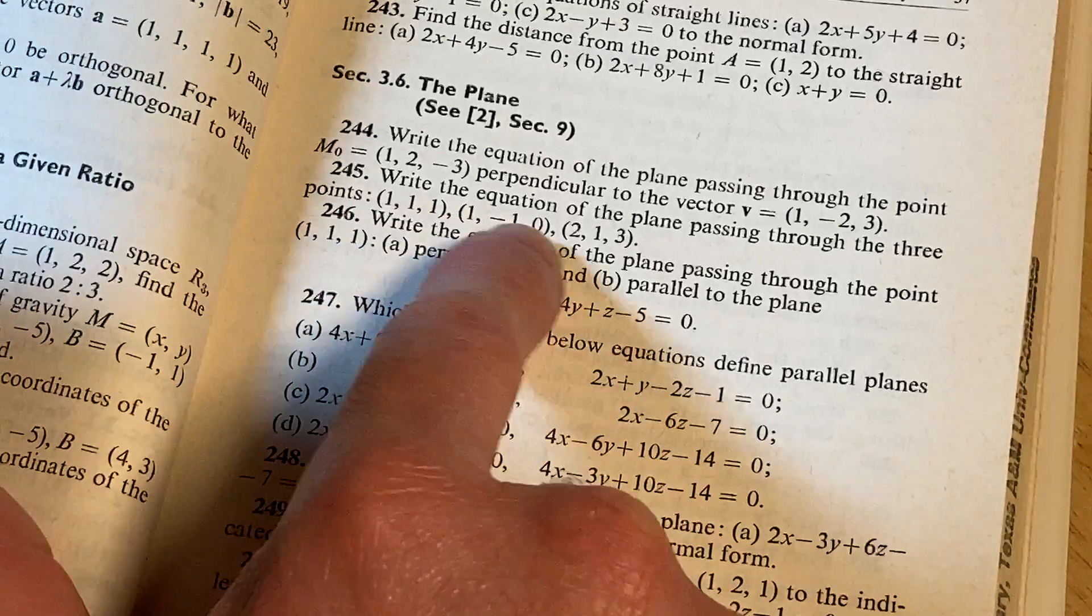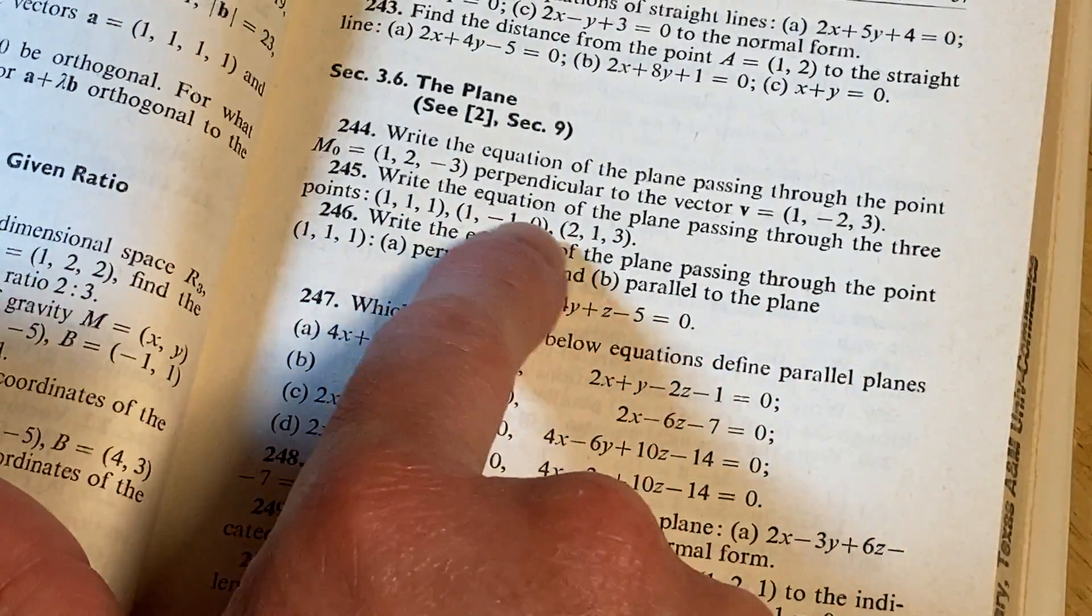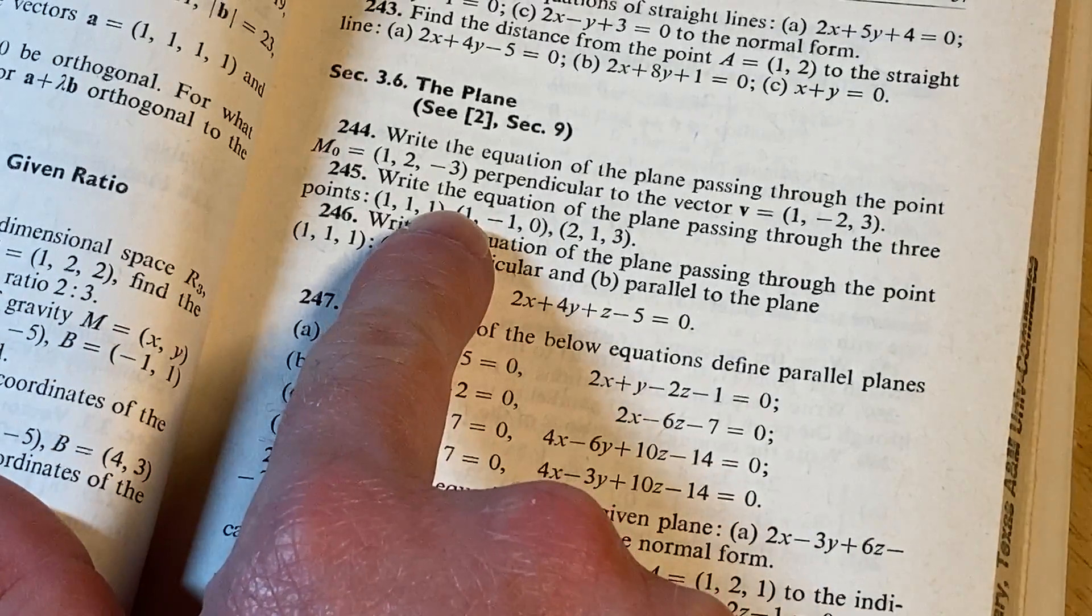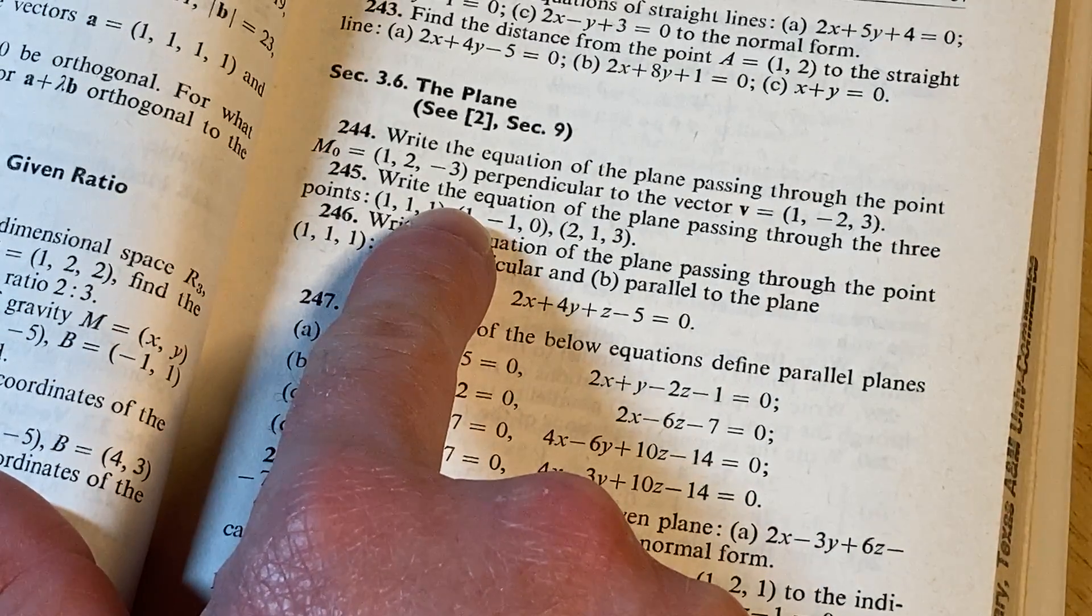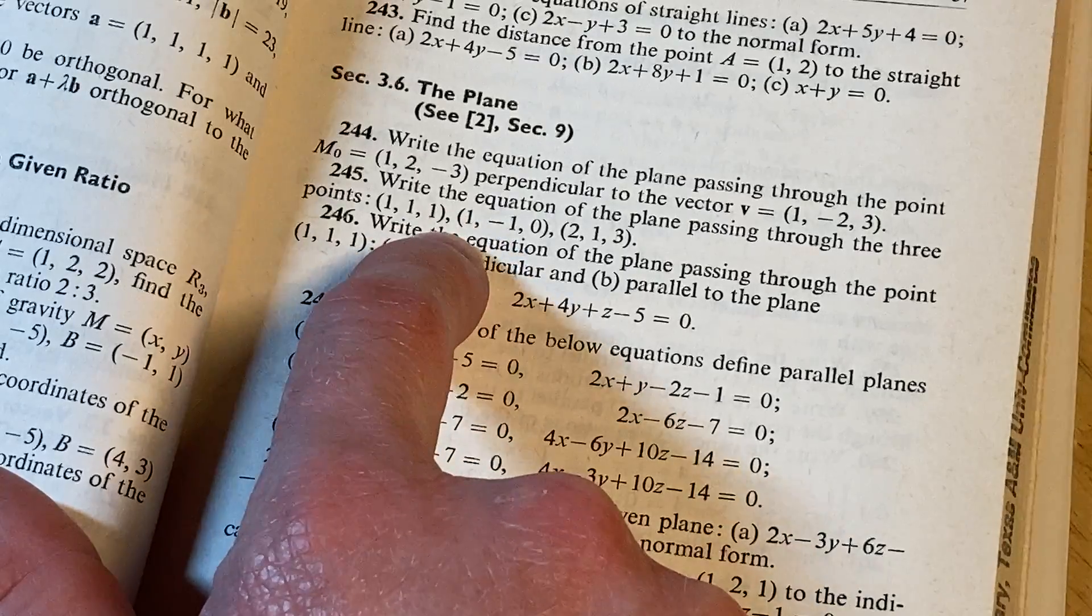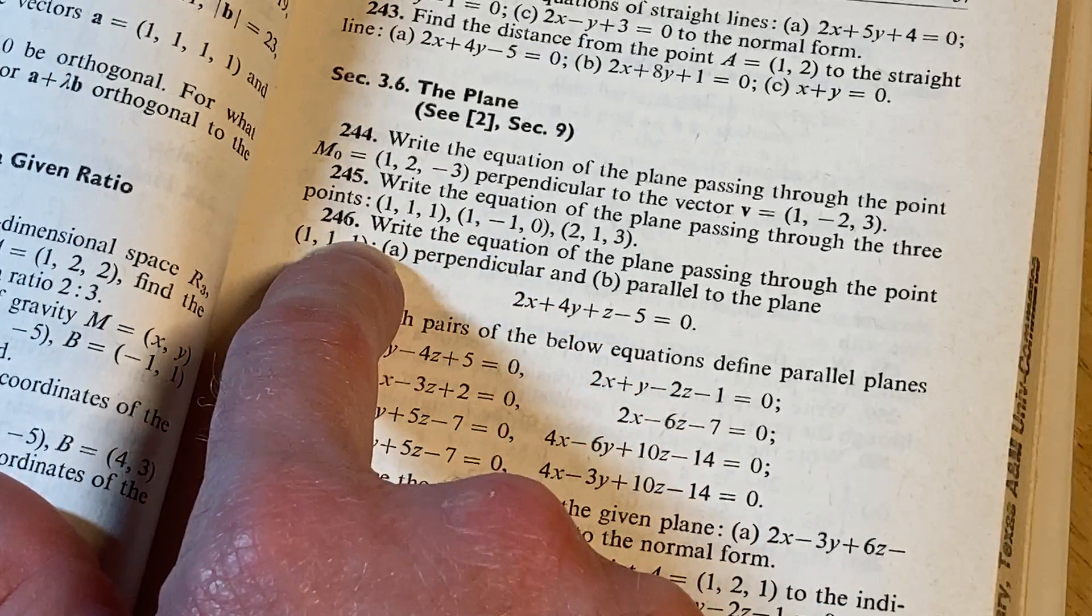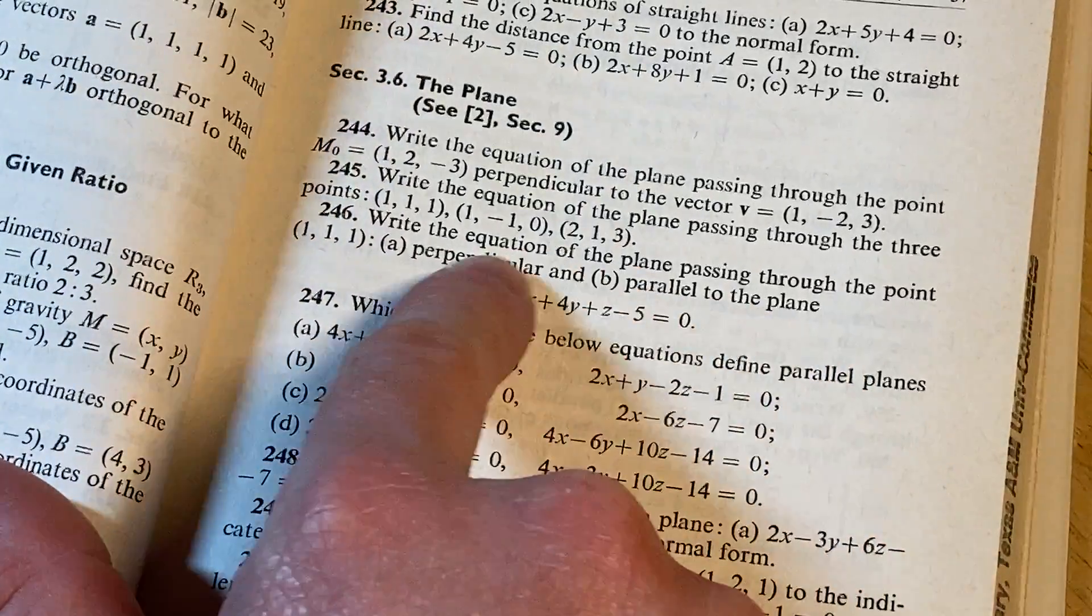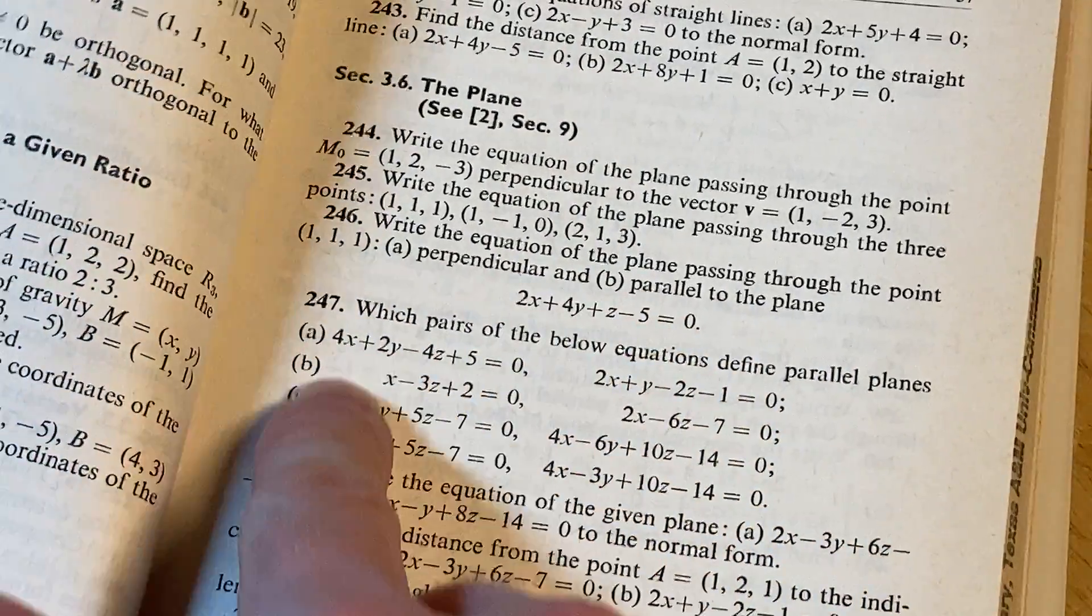Yeah. Write the equation to the plane passing through three points. Also pretty easy. You just find two vectors and you take the cross product and that gives you your normal vector. And then you have your point and your vector, so you have your plane. Yeah, these are a little bit harder, but still pretty easy.